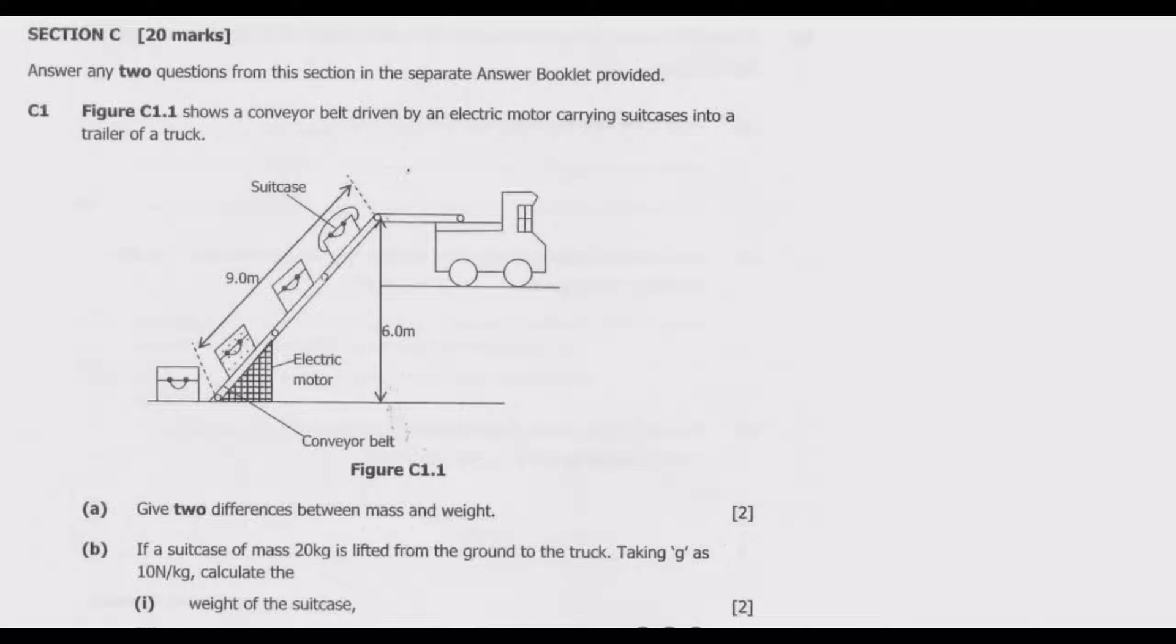Question A: Give two differences between mass and weight. That's 2 marks. So the first difference is that mass measures the amount of matter contained in an object.